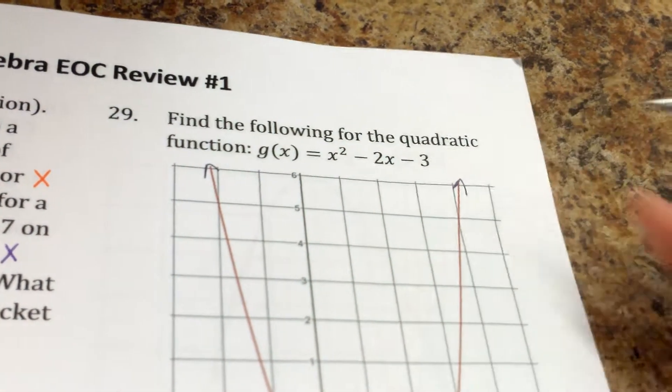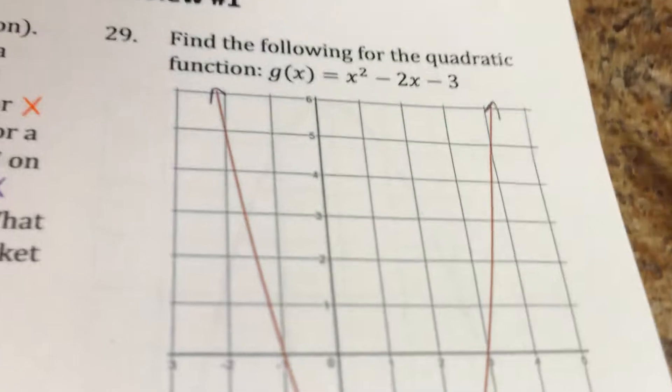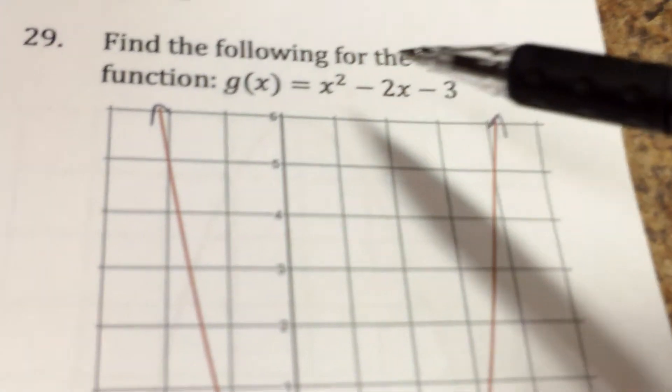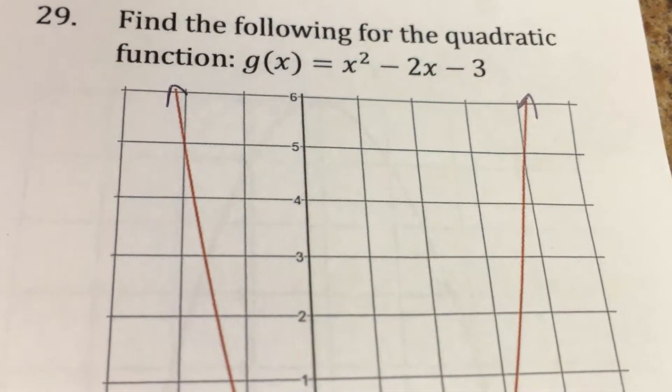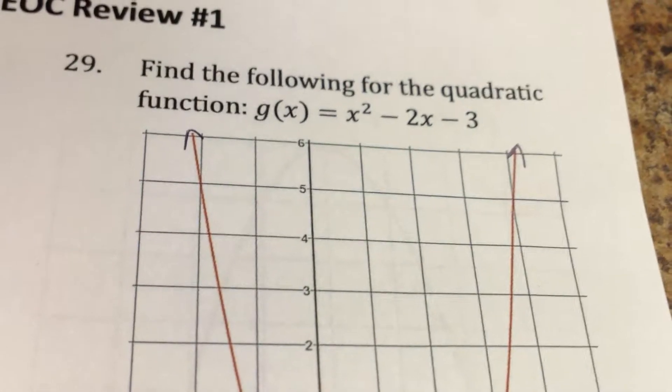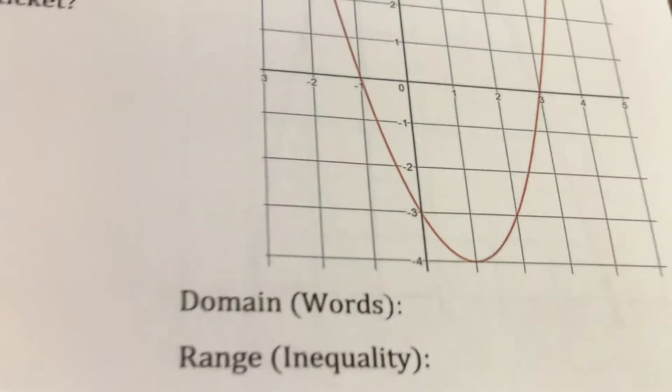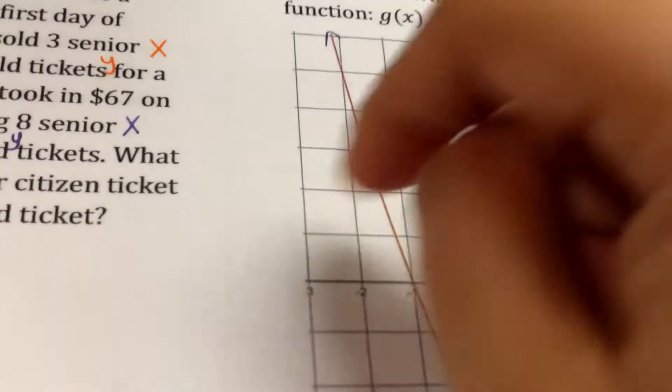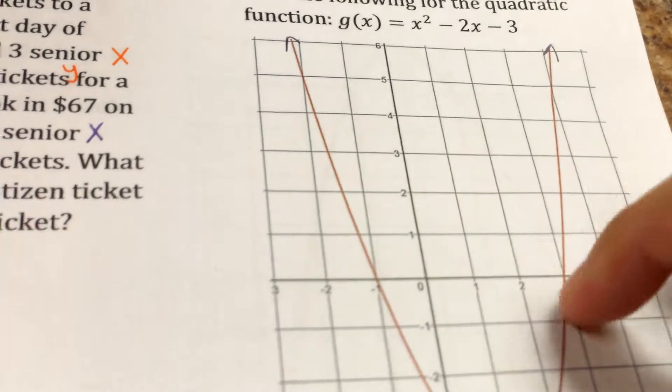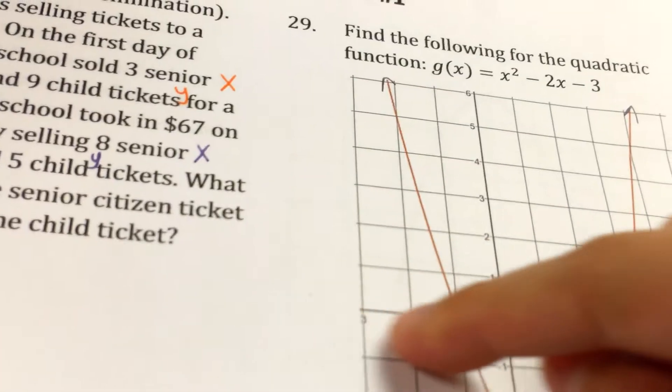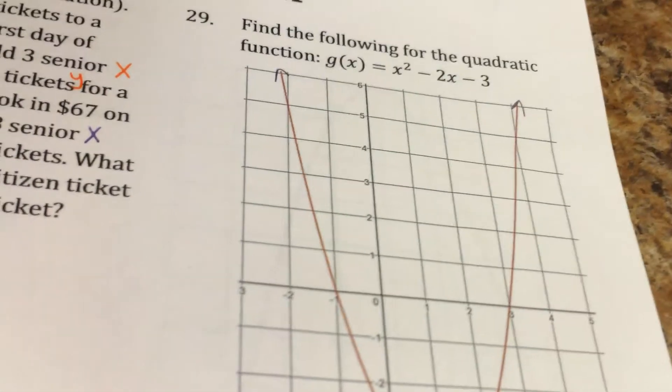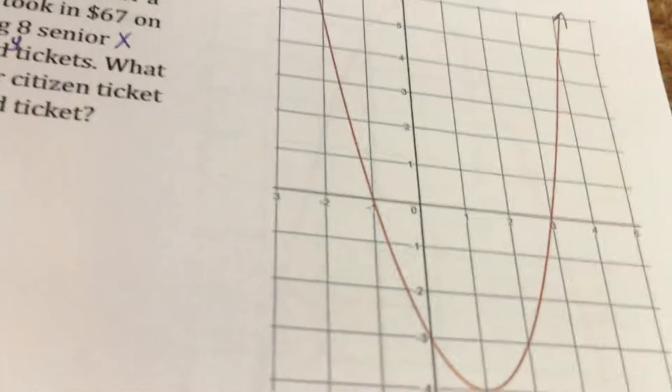So here we have x squared minus 2x minus 3 and we have it graphed. Now we need the domain. The domain is your x value. Since this goes on forever to both sides, your x values are actually everything. So when it's everything, the answer is all real numbers.